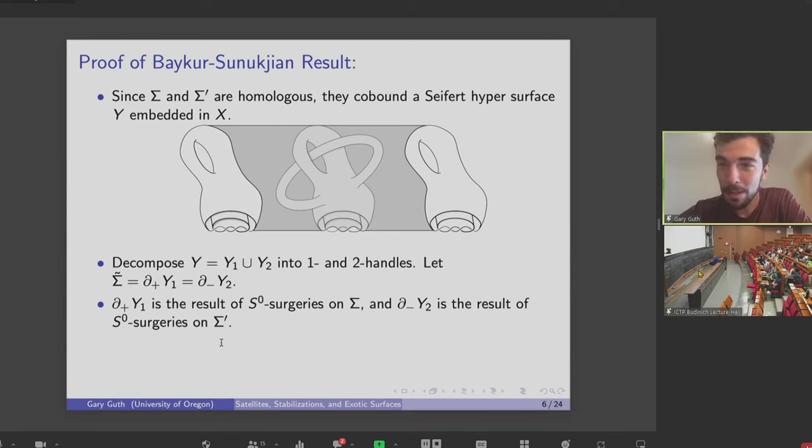So it's sigma prime with a bunch of tubes attached. But these were two different descriptions of the same surface. So this is the claim, actually, that if you attach tubes to sigma and sigma prime, eventually, they'll become smoothly isotopic. But this cobordism is sort of found abstractly. So you have no idea how many 1-handles are in this handle decomposition. So you have no idea how many tubes are really necessary to dissolve the exotic behavior.